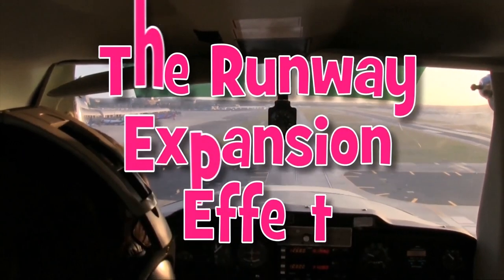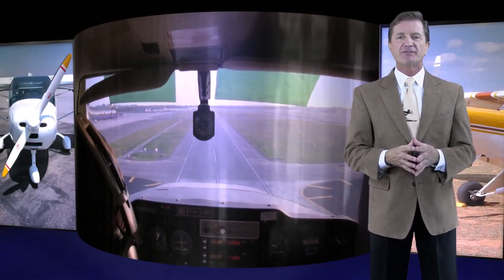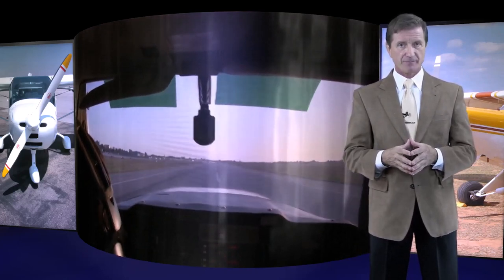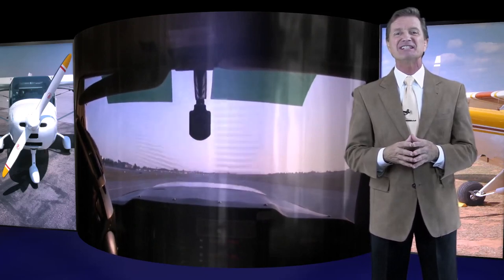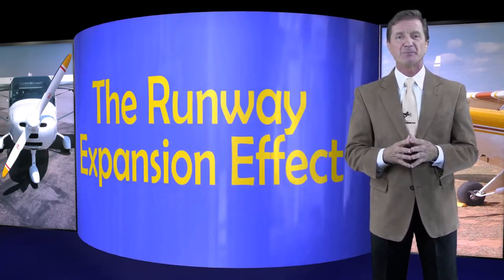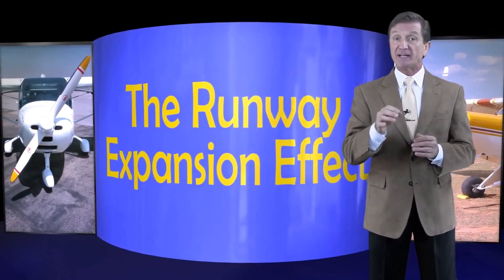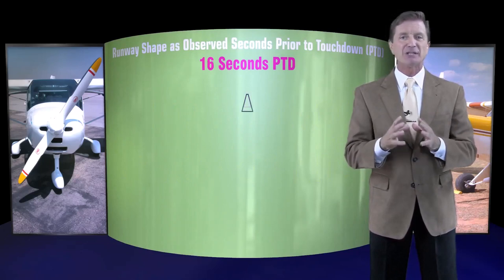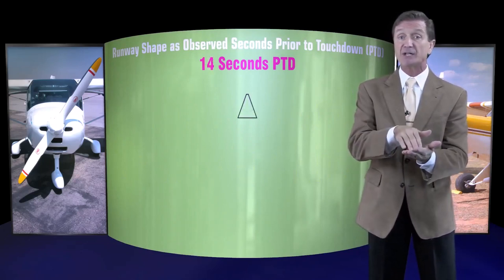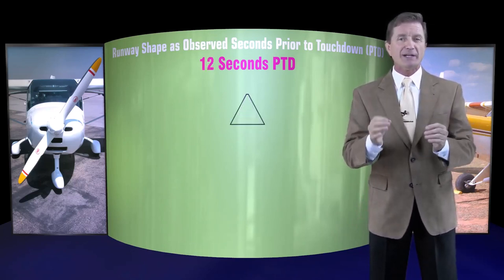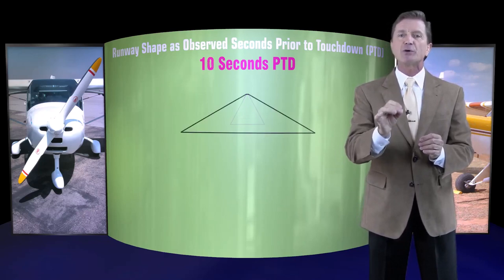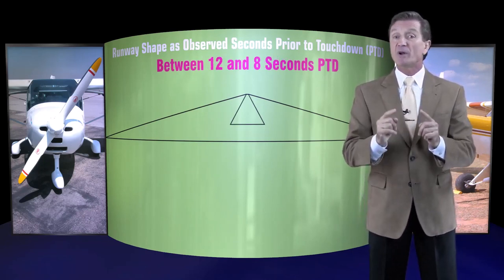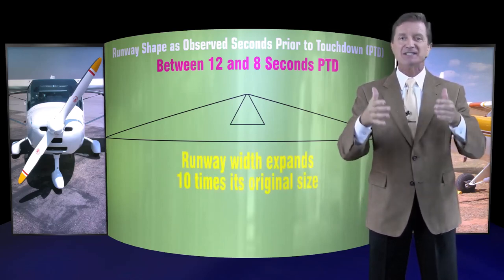The Runway Expansion Effect. Rod Machado here. What if I could show you how to identify when to begin the roundout and flare for landing in a way that doesn't rely on depth perception? Let's discuss the technique called the Runway Expansion Effect. As we learned in an earlier video, when you approach the runway in a stabilized descent, its trapezoidal shape appears to grow in the windscreen. The rate of growth isn't linear — the width of the runway near your selected landing spot appears to expand geometrically, with the largest amount of growth occurring when you're 8 to 10 seconds from touchdown. During the period from 12 seconds to 8 seconds prior to touchdown, the runway width at your selected landing spot appears to expand 10 times in size.